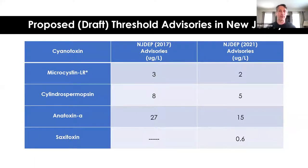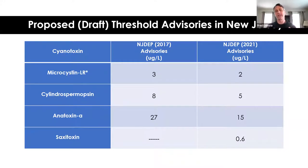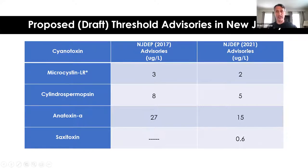This is just showing you the New Jersey threshold advisories. These are advisories, not regulated compounds. EPA just finished a three-year study on a variety of cyanotoxins and will determine whether they should have actual regulated thresholds. Here are New Jersey's recommended criteria from 2017 and updated in 2021. They just added saxitoxin this year. The take-home message is that for microcystin and cylindrospermopsin, New Jersey's concentrations are lower than EPA's for their recommended advisories.